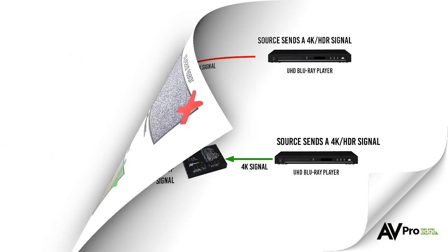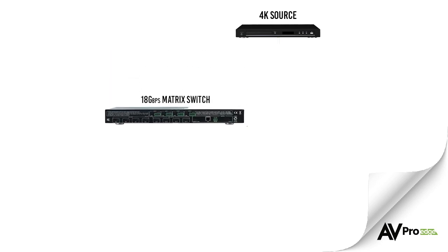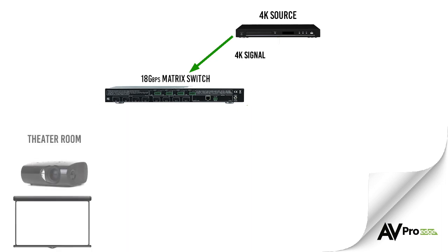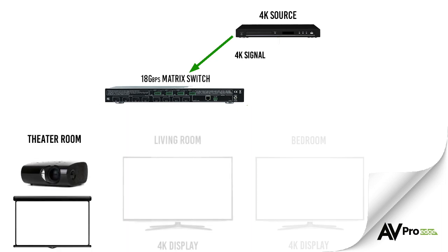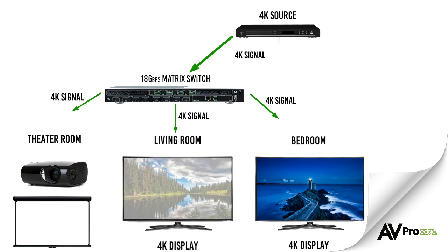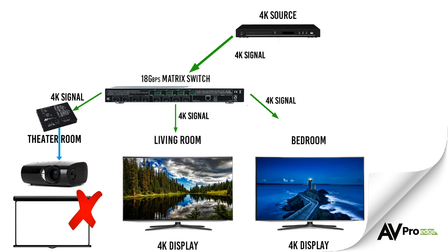In a multi-zone installation, scaling can be very important. Let's say we have a source that needs to be distributed to many zones, and a matrix switch is used to handle this distribution. One of the zones has a 1080p projector, and the rest have 4K displays. A 4K signal is sent via the matrix to every zone and they all work, except the 1080p projector. By placing a scaler before the projector, you are able to maintain a 4K signal in every zone and only downscale to 1080p for the projector.